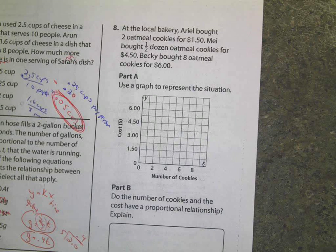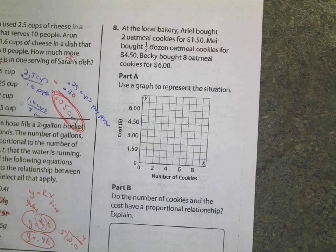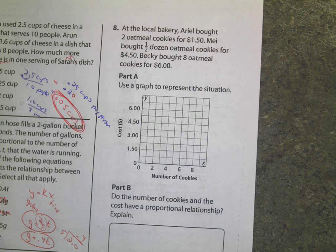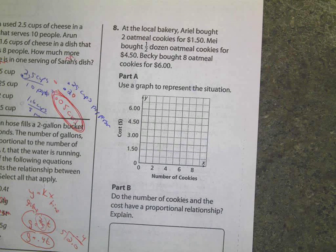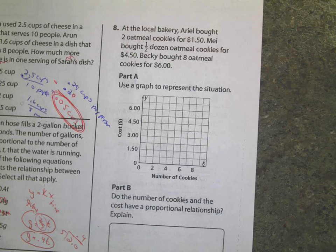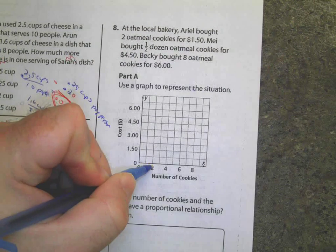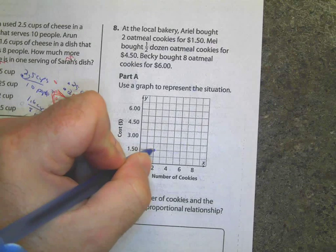Part B says, do the number of cookies and the cost have a proportional relationship? Explain. Part C, what does the point one comma 0.75 represent? And what does zero comma zero represent? Okay, lots of information. First of all, let's go graph this. If I got two oatmeal cookies and I spent $1.50, so put a dot right here.